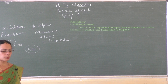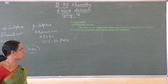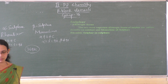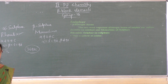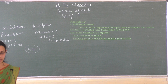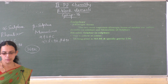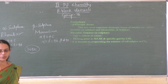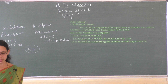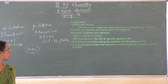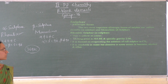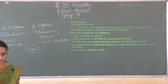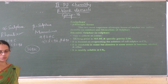The two most important allotropic forms of sulfur are yellow rhombic alpha sulfur and monoclinic sulfur. Alpha sulfur is yellow in color, with a melting point of 385.8 K and specific gravity 2.06. It is formed by evaporating the solution of raw sulfur in carbon disulfide; insoluble in water but dissolved to some extent in benzene, alcohol and ether, and readily soluble in carbon disulfide.